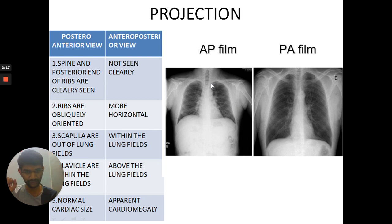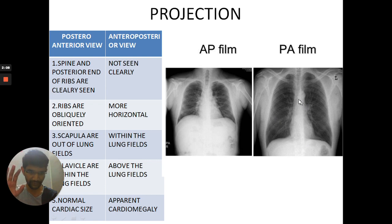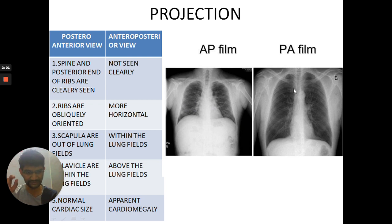In AP view, the clavicles are outside the lung fields, whereas in PA view they are within the lung fields. In AP view there is an apparent cardiomegaly, while in PA view the cardiac size appears normal. The ribs are more obliquely placed in AP and more horizontally placed in PA. The scapula is within the lung field in AP and outside in PA. These are the basic differences between PA and AP views.